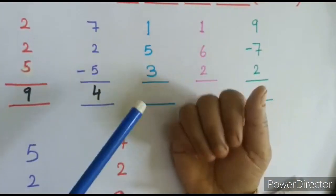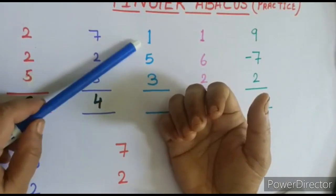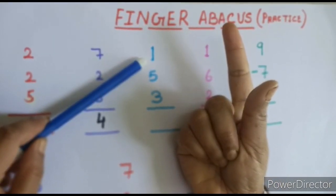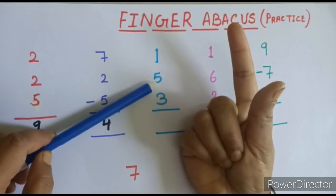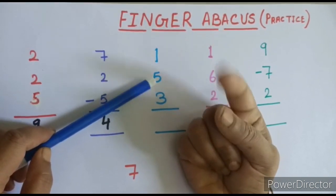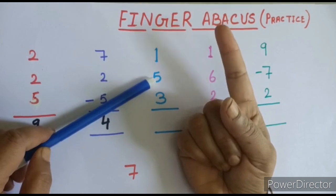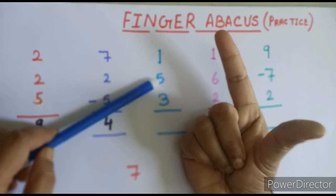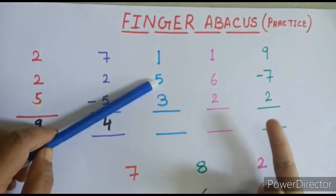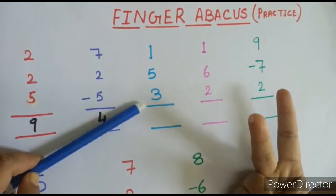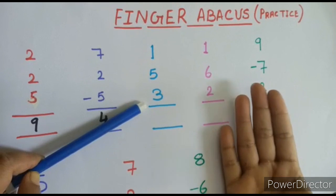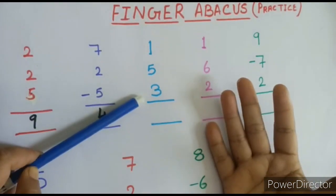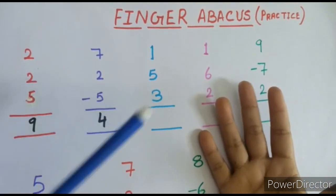Our next example: the first number is 1 — open 1 finger. Then plus 5 — we just open the thumb. Then plus 3 — open 3 more fingers, so: 1, then open thumb (5, 6), then 7, 8, 9. The answer is 9.